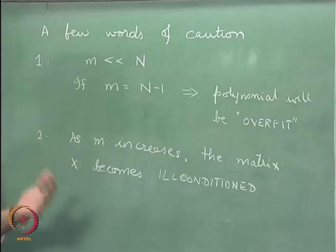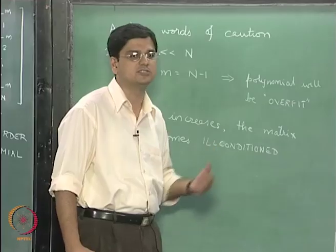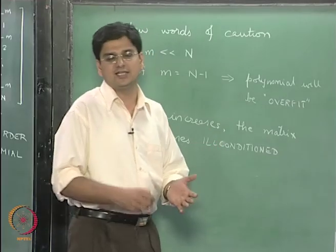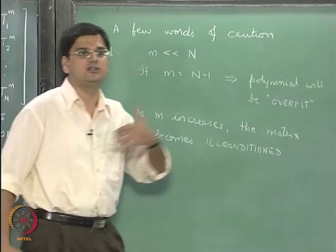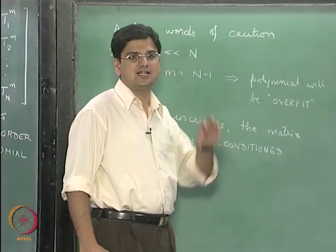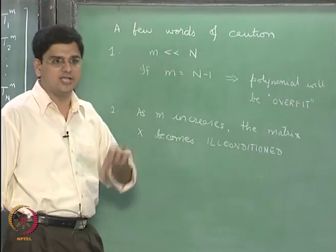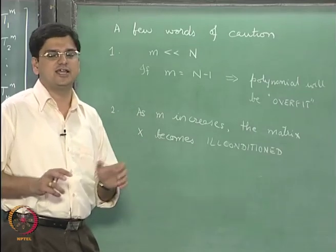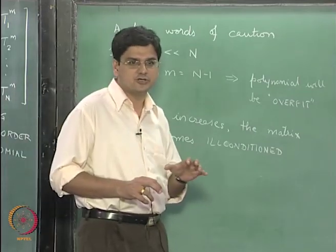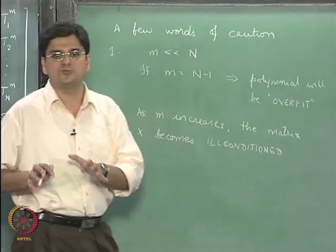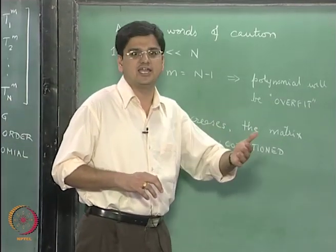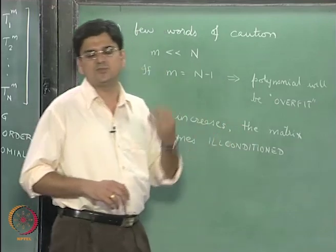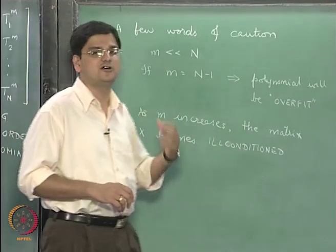When we are inverting a number, for example if we invert 1000, that number becomes 0.001. On the other hand, if we invert a number like 10 to the power minus 5, the inverse becomes 10 to the power 5. As a result, the small eigenvalues in X transpose X become large eigenvalues in its inverse, and small errors in those eigenvalues appear as large errors in the solution.